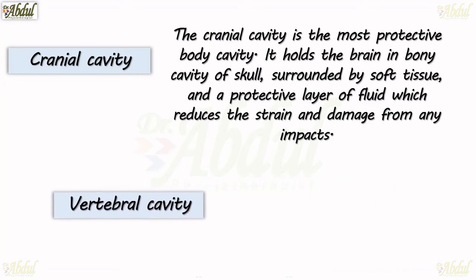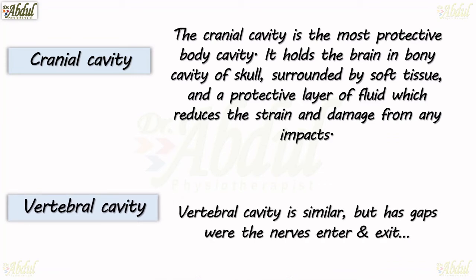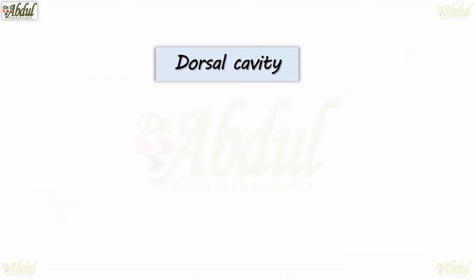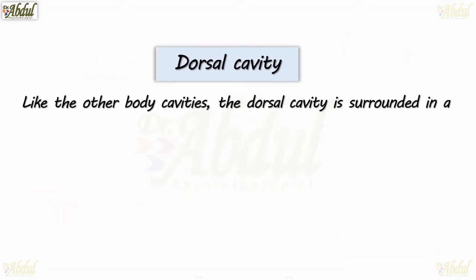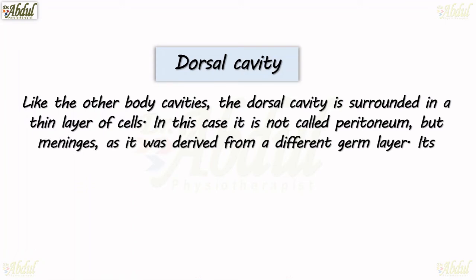The vertebral cavity is similar to the cranial cavity but has gaps where the nerves enter and exit. Like the other body cavities, the dorsal cavity is surrounded by a thin layer of cells — in this case not called the peritoneum but the meninges, which is derived from different germ layers. Its function, however, is the same.